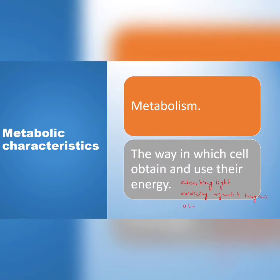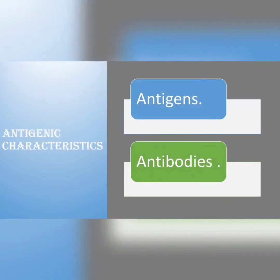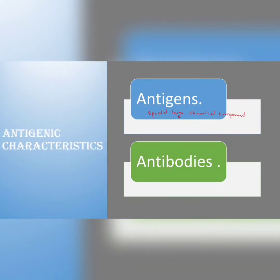Microorganisms obtain energy from different sources to maximize their metabolic activity. Next is antigenic characteristics. Certain chemical compounds of microbial cells are called antigens — antigens are large, specific protein molecules. If a microbial cell or any other foreign cell enters the animal body, the animal responds to the antigen by forming specific blood serum proteins called antibodies, which bind to the antigens.